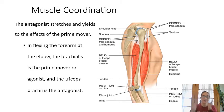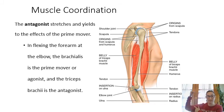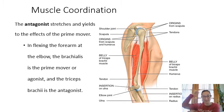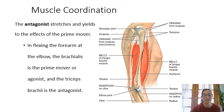On the opposite side, if we have an agonist we can also have an antagonist. If the agonist for elbow flexion is the biceps, then the antagonist is the triceps. The biceps brachii is the agonist for elbow flexion, and the antagonist for elbow extension is the triceps brachii.